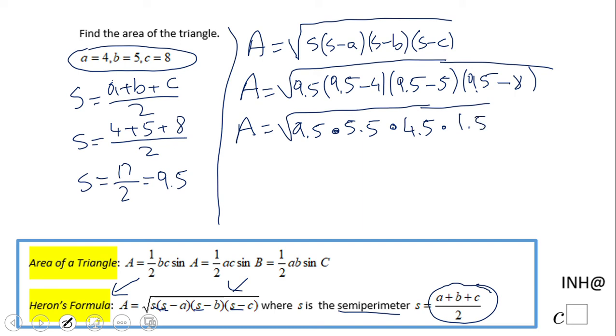So let's grab a calculator now. I'm going to multiply these four numbers, and I get 352.687, and take square root of this, and I'm going to approximate it to the nearest tenth, that will be 18.8 square units.